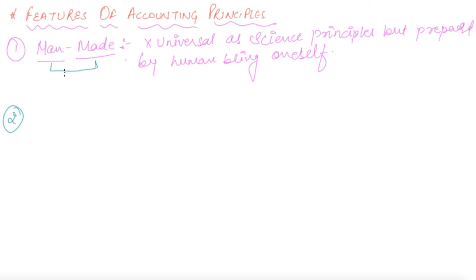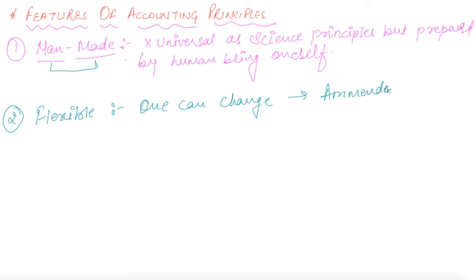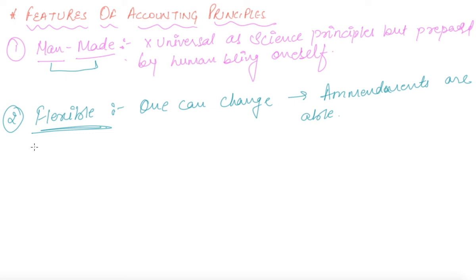Since these are man-made, they are flexible as well — that is, amendments can be made as per requirement. Just like the budget changes every year due to the necessity of the economy, the laws of accounting also change. These principles should always be flexible because they are made by human beings, and chances of error will always be there.